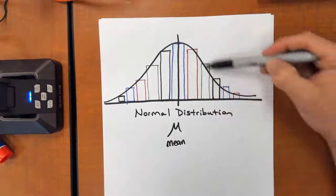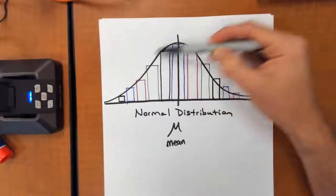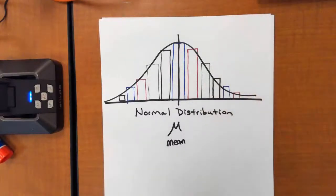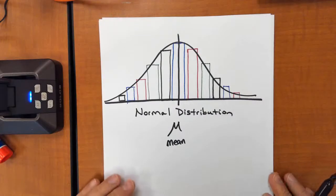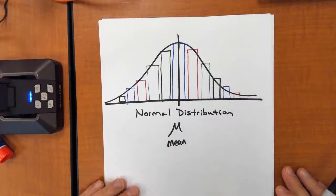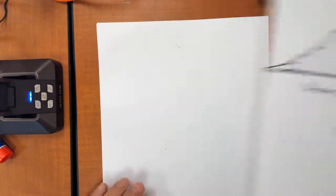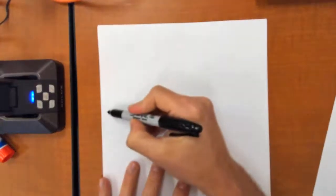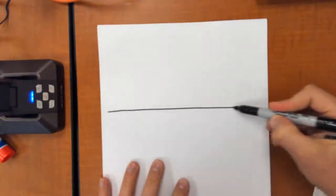But first off, we're going to talk about this shape and this type of distribution is called a normal distribution. We're trying to learn about something called standard deviation. So we get rid of all those extra bars and just draw the curve.